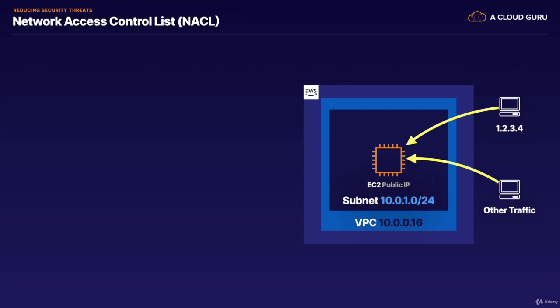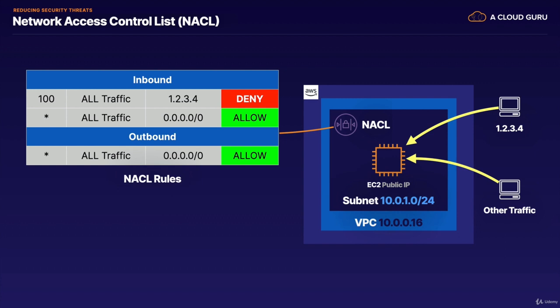So for example, let's say we've identified a bad actor out on the public internet with a known IP address. Here in the diagram, we represent that IP address as 1.2.3.4. As you learned in a previous lesson, you can use Network Access Control Lists, or NACLs, to allow or deny certain IPs or ranges of IPs into your subnet. We could do this with a combination of inbound and outbound rules. Say we want to block all traffic from this known bad actor IP, 1.2.3.4 — we create a new inbound NACL rule, rule 100 here in the diagram, that'll deny all traffic from that IP.